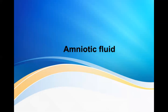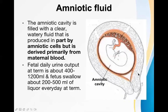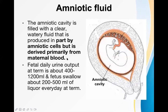Amniotic fluid fills the amniotic cavity. The baby is surrounded by amniotic fluid, lying inside the amniotic cavity, which is covered by the amnion and chorion. This cavity is filled with a clear watery fluid called amniotic fluid. It is mainly derived from the maternal blood — it is an ultrafiltrate of maternal blood — and part of it is formed by amniotic cells.